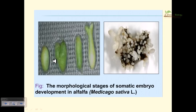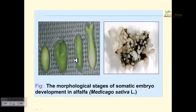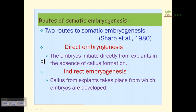These pictures show the stages of embryogenesis: globular shape, then heart-shaped, then torpedo shape, and finally the matured cotyledonary stage. After that, germination occurs, root and shoot are generated. This illustrates the morphological stages of somatic embryo development in alfalfa.